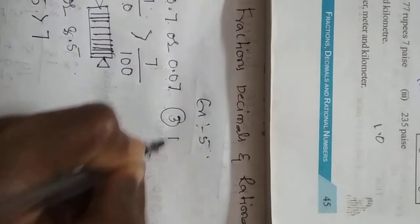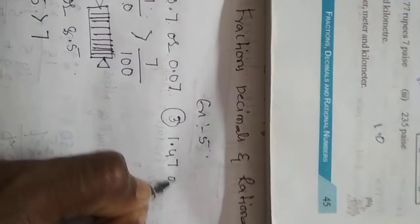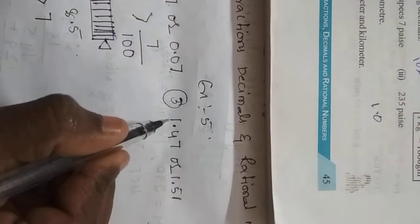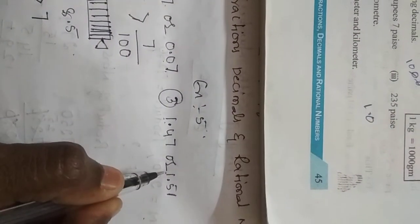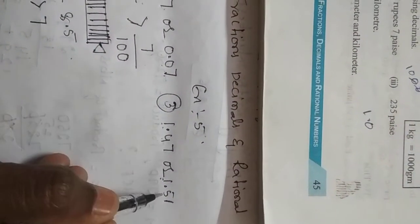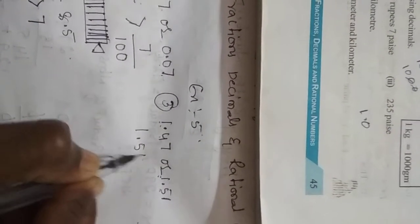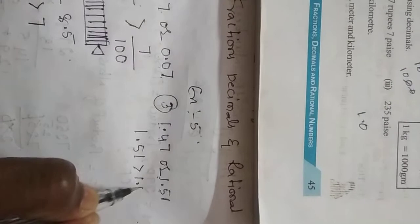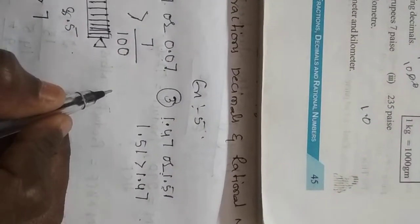Third one: 1.47 or 1.51? See, 1 is same for both. Next, after the point you see 4 and 5. 5 is greater than 4. Therefore, 1.51 is greater than 1.47.